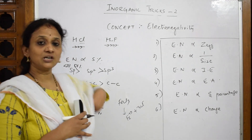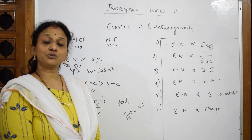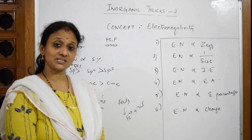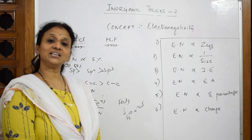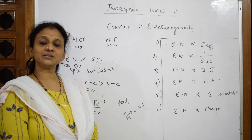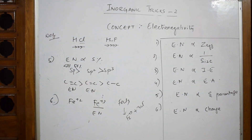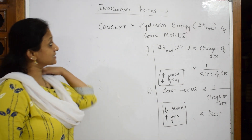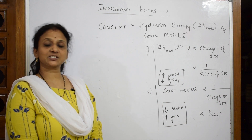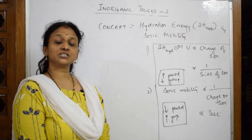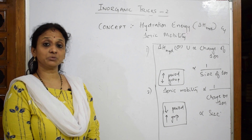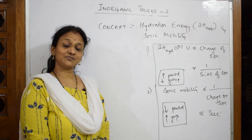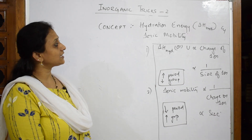This is the electronegativity section. I have discussed all the points and all the definitions. Note this as an important trend and important trick for electronegativity in your book. We have learned ionization enthalpy trend, electron affinity trend, variations in size, and electronegativity. Now let me come back with the next trend — hydration enthalpy or ionic mobility.